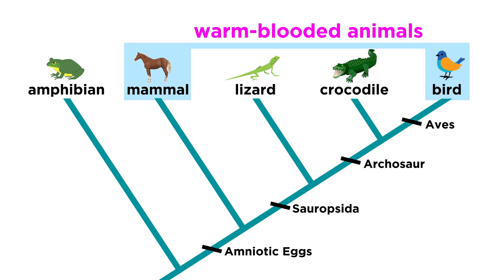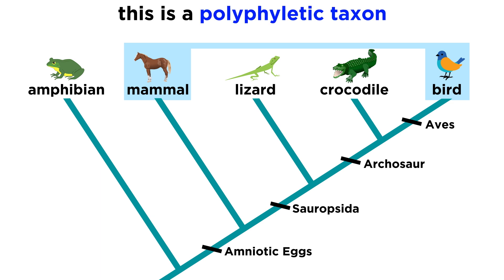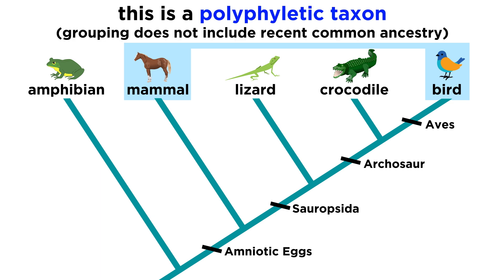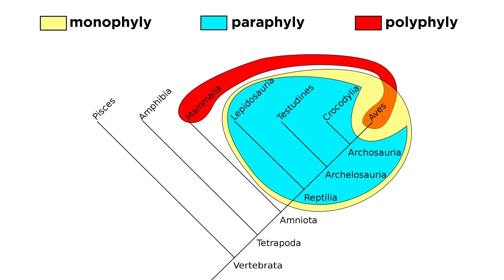If we were then to try and group the mammals and the birds together as being warm-blooded, we are now creating a polyphyletic grouping, because the mammals and birds do not share recent common ancestry. Let's now display these groupings all at once — monophyly, paraphyly, and polyphyly — so that we can more clearly see the differences between them.